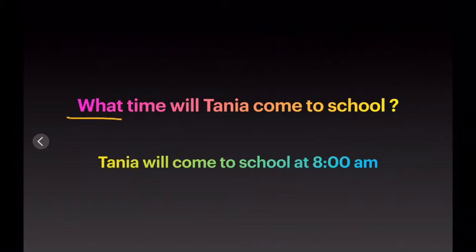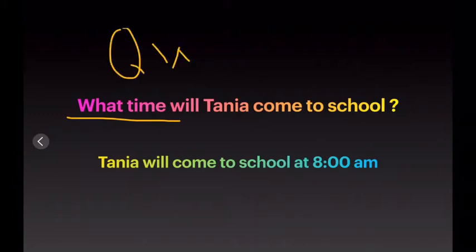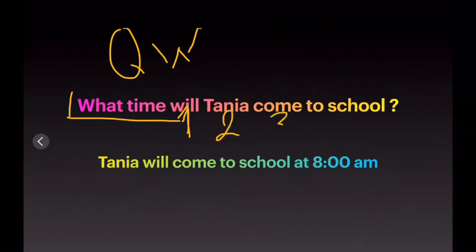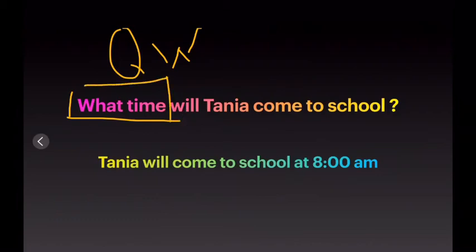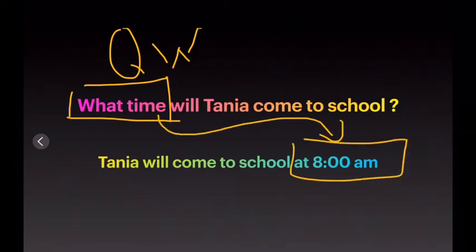Look at the question. Now we have 'what time' — that is a question word. Do you remember the question words? They are question words like 'when,' 'where,' 'how many,' as you have here. For example, you have 'what time,' or it can be 'who.' So the question is: 'What time will Tania come to school?' Remember, 'will' is in the first place now, 'Tania' is in the second place, and in the third place we have 'come.' Our answer is: 'Tania will come to school at 8 o'clock.' We have to answer the question word 'what time' — at 8 o'clock, or at 8 a.m.